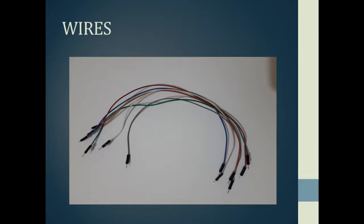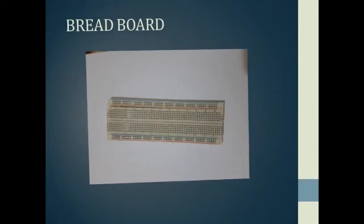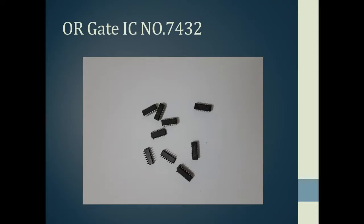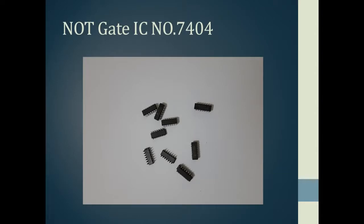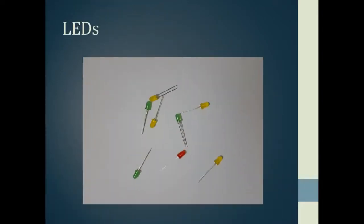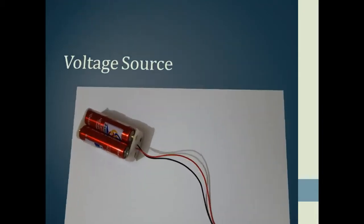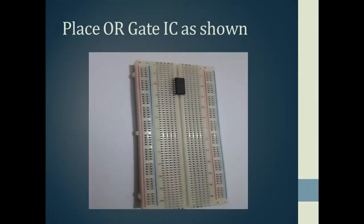For making the NOR gate, the things we are going to use are: a breadboard, an OR gate IC with IC number 7432, a NOT gate IC with IC number 7404, LEDs, and a voltage source.